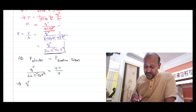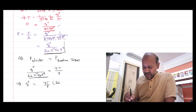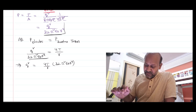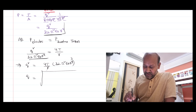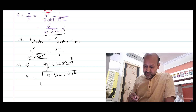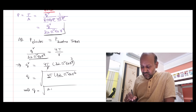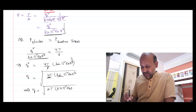We want charge Q, so let us write Q² on one side and all other terms on the other side. Q² = (4T/R) × 32π²ε₀R⁴. One R cancels, leaving Q² = 4T × 32π²ε₀R³ = 128π²ε₀TR³. To find Q, take the square root: Q = √(128π²ε₀TR³). We can rearrange: 4 × 32 = 128, and taking 2 outside gives Q = √(64 × 2π²ε₀TR³).